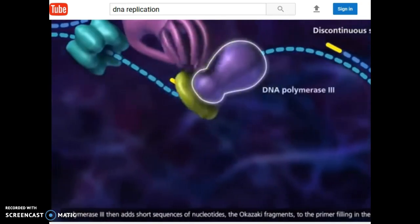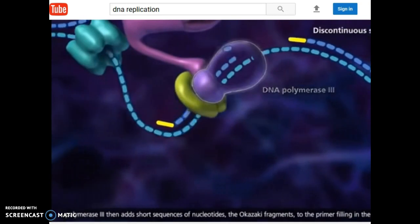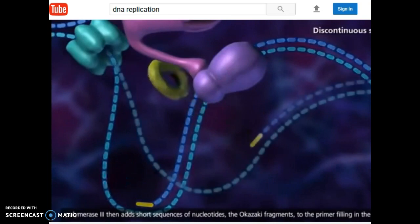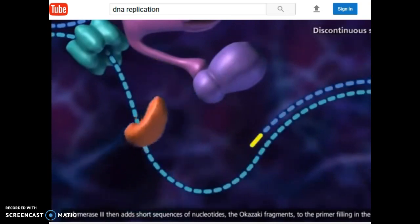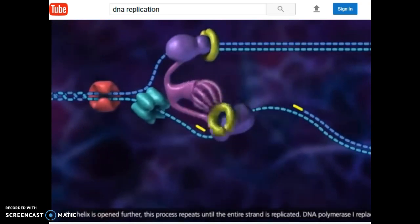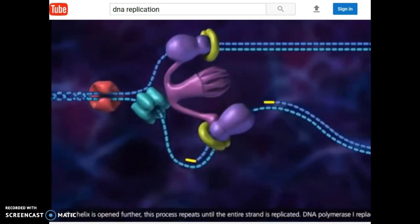DNA polymerase three then adds short sequences of nucleotides, the Okazaki fragments, to the primer filling in the gap. As the helix is opened further, this process repeats until the entire strand is replicated.